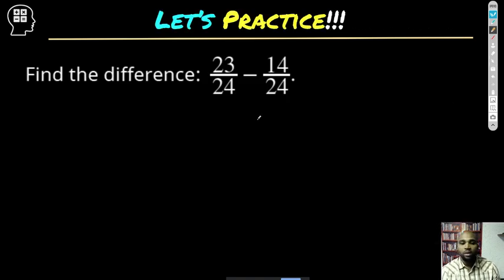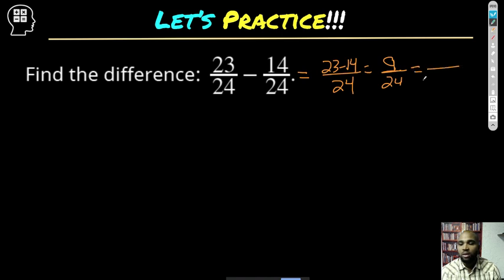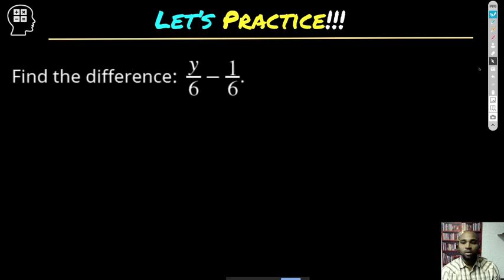Let's do this one together. Subtracting fractions — both have the same denominator, so we leave it that way, and we end up with 23 minus 14. Can we combine 23 and 14? Absolutely — that gives us 9 over 24. Do 9 and 24 have any common factors? Yes, both have a 3. Taking a 3 out of each leaves me with 3 over 8. Do 3 and 8 have any common factors other than 1? No — so 3 over 8 is my answer.